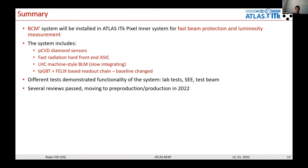In summary, the BCM prime system to be installed in Atlas ITK provides fast beam protection and luminosity measurements for the high-luminosity LHC. The system is based on polycrystalline diamond sensors with a custom Calypso readout chip, a beam loss monitor with LHC-style electronics, and a readout chain based on LPGBT and FELIX Atlas circuitry. Different tests have demonstrated the viability of this system and several Atlas reviews have been passed. It is now moving to pre-production this year.